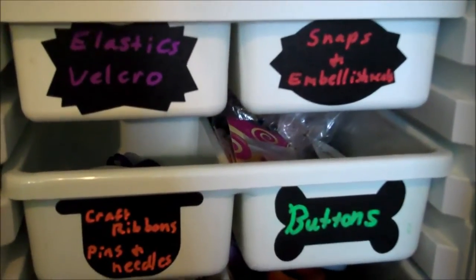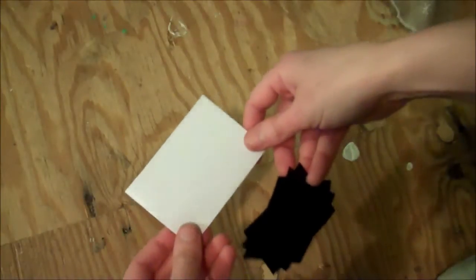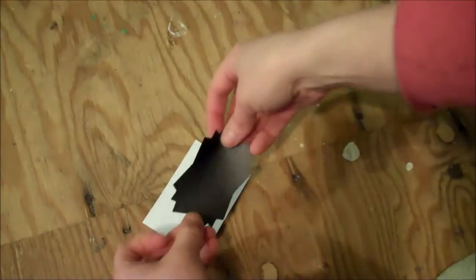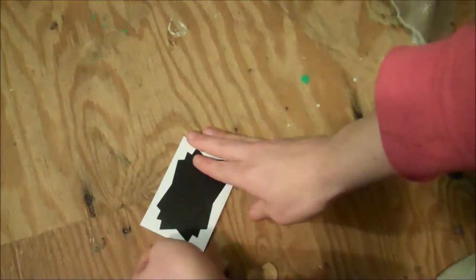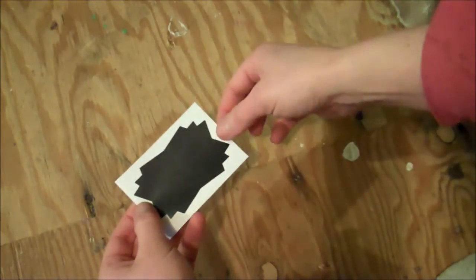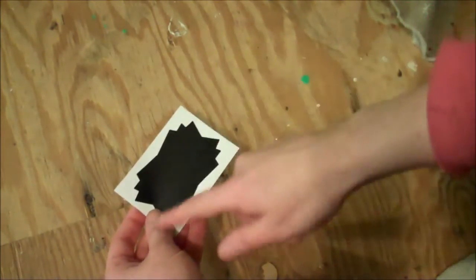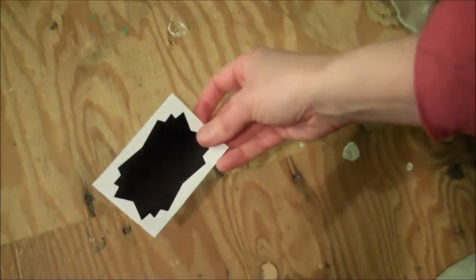These also work great as kitchen labels, and they also make great reusable gift tags. If you just take a piece of cardstock, put one of the labels in the center, then you can just punch a hole on either end and tie it onto a package. And you'll be able to write whoever's name you want there and use the tag over and over again.